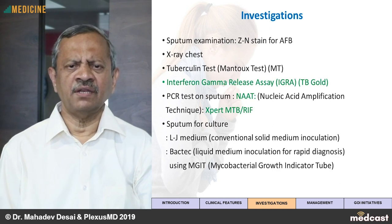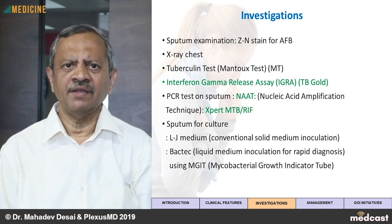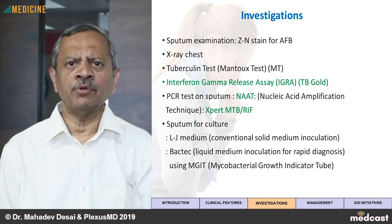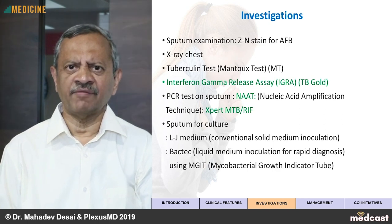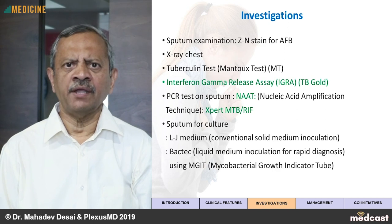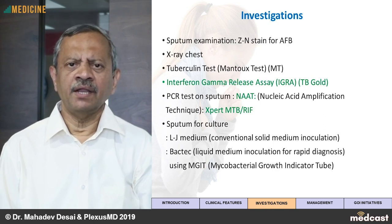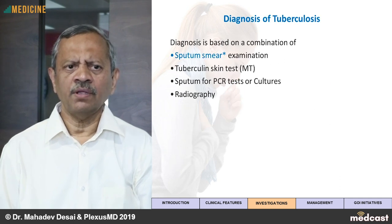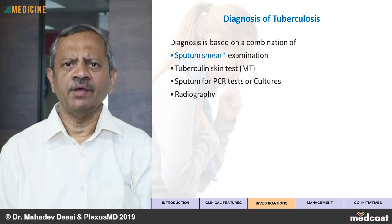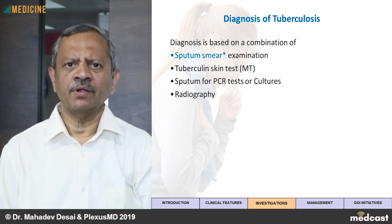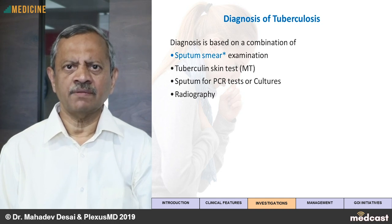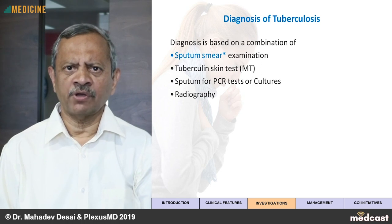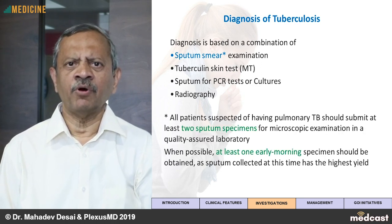Regarding sputum for culture: conventionally tuberculosis bacteria require a long time to grow on solid media — the LJ medium, Lowenstein-Jensen medium. Then came the BACTEC medium, a liquid medium which uses the Mycobacterium Growth Indicator Tube called MGIT, which diagnoses tuberculosis in less than a week. Later came the nucleic acid amplification test. Overall, diagnosis is based on a combination of sputum smear examination, tuberculin test, sputum for PCR or cultures and radiography. Many times you need to combine all of these, especially in extra-pulmonary tuberculosis.